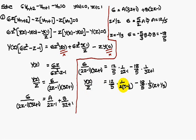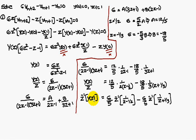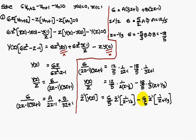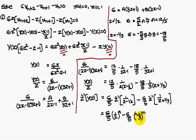Therefore Y(Z)/Z equals this expression, so Y(Z) equals (12/5)·Z/(2Z minus 1) minus (18/5)·Z/(3Z plus 1). Taking 2 common from the first denominator gives Z/(Z minus 1/2), and taking 3 common from the second gives Z/(Z plus 1/3). After cancellation: 12/5 divided by 2 gives 6/5, and 18/5 divided by 3 gives 6/5. Therefore Yn equals (6/5)·(1/2)ⁿ minus (6/5)·(minus 1/3)ⁿ. This is the way of solving applications to difference equations using Z-transforms. Thank you.